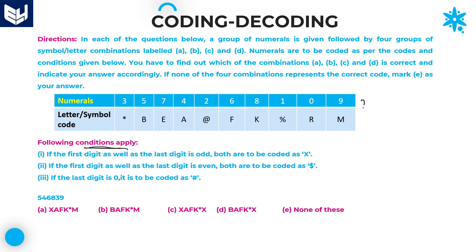This is a table. In the first row, letters or symbols are given, and in the second row their codes are given. Below that, some conditions are given. Read the first condition: if the first digit as well as the last digit is odd, it is to be coded as X. Next, if the first and last digit are both even, it is to be coded as dollar. If the last digit is zero, it is to be coded as hash. Note that zero is neither even nor odd unless specifically stated in the problem.